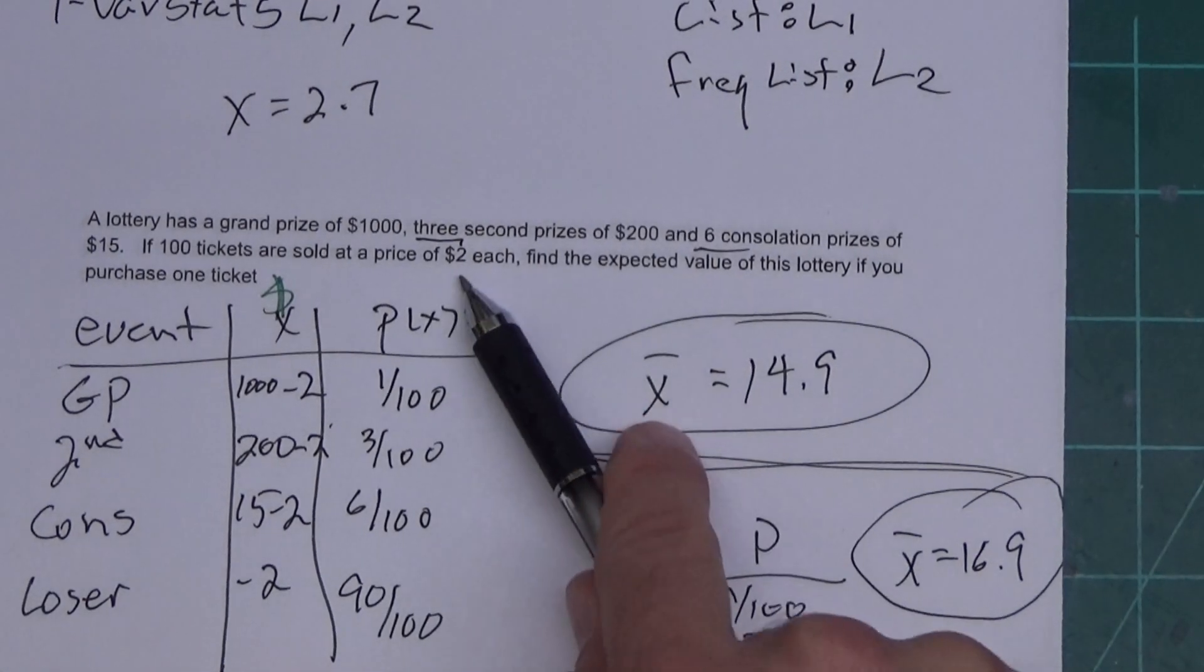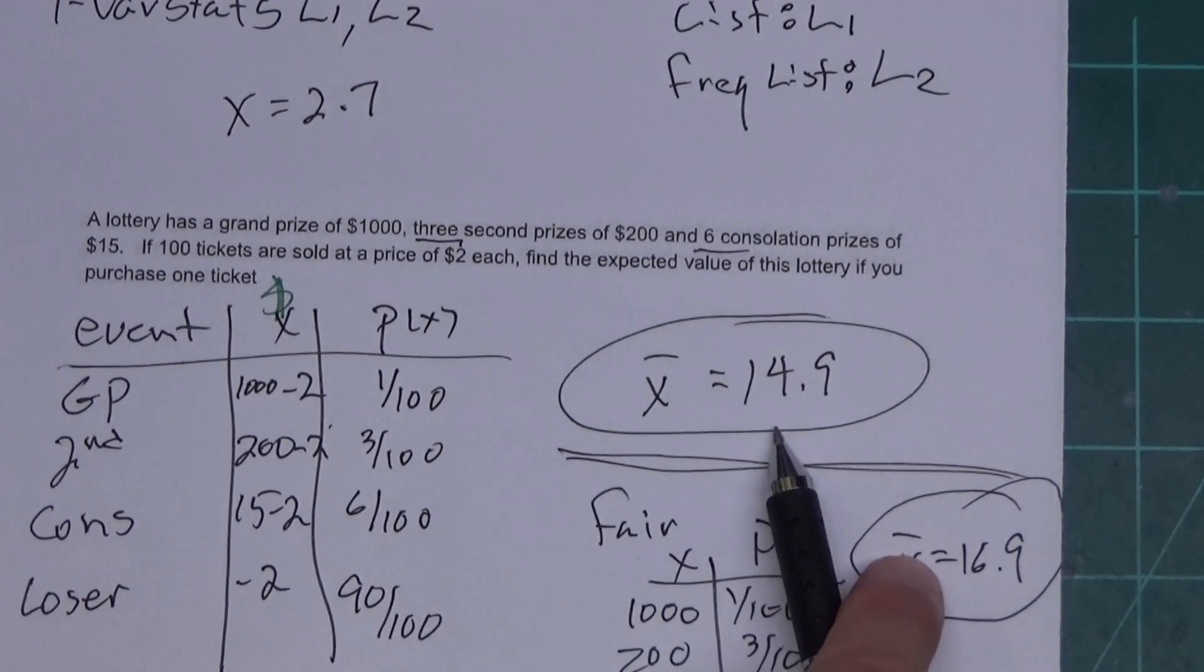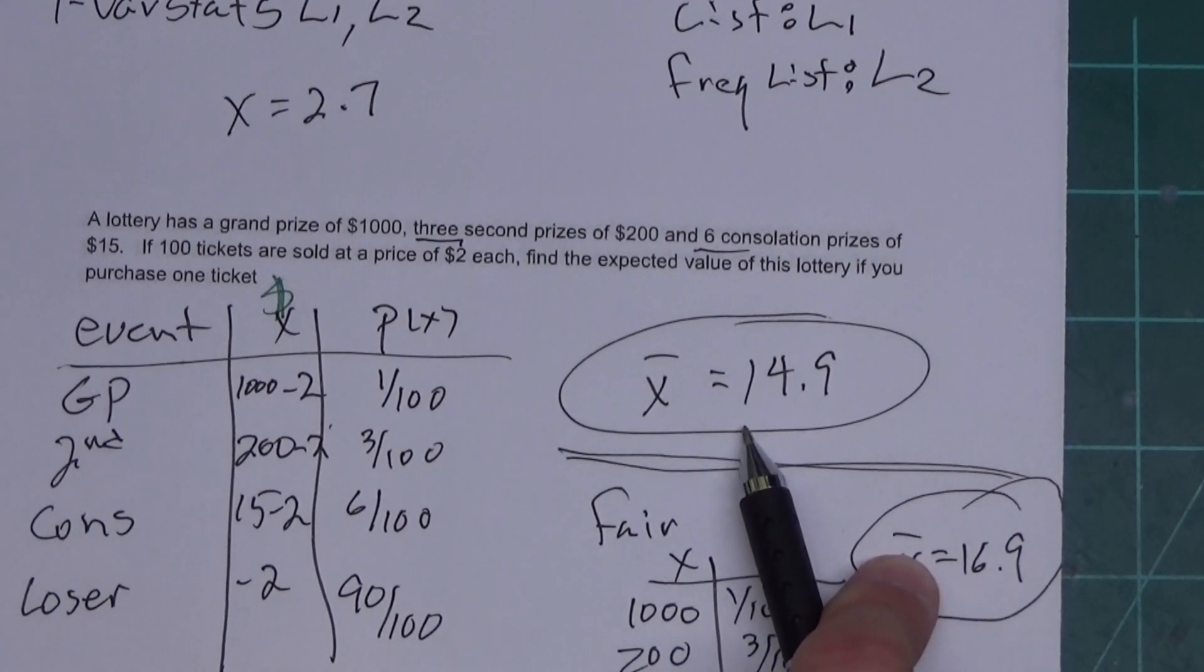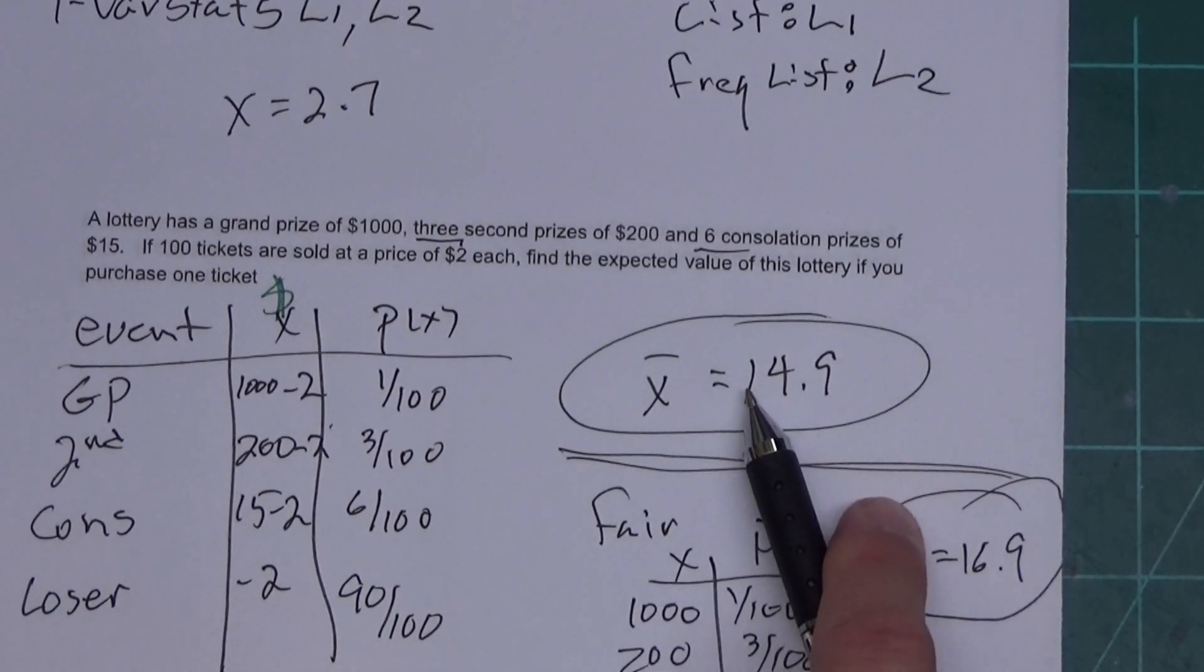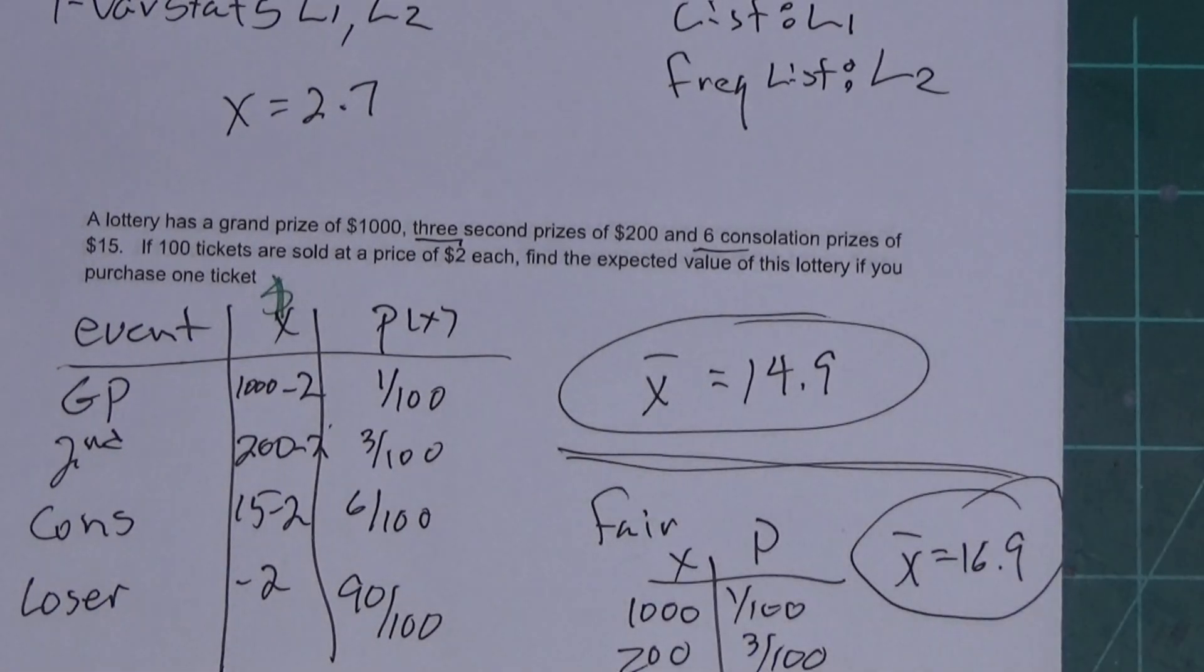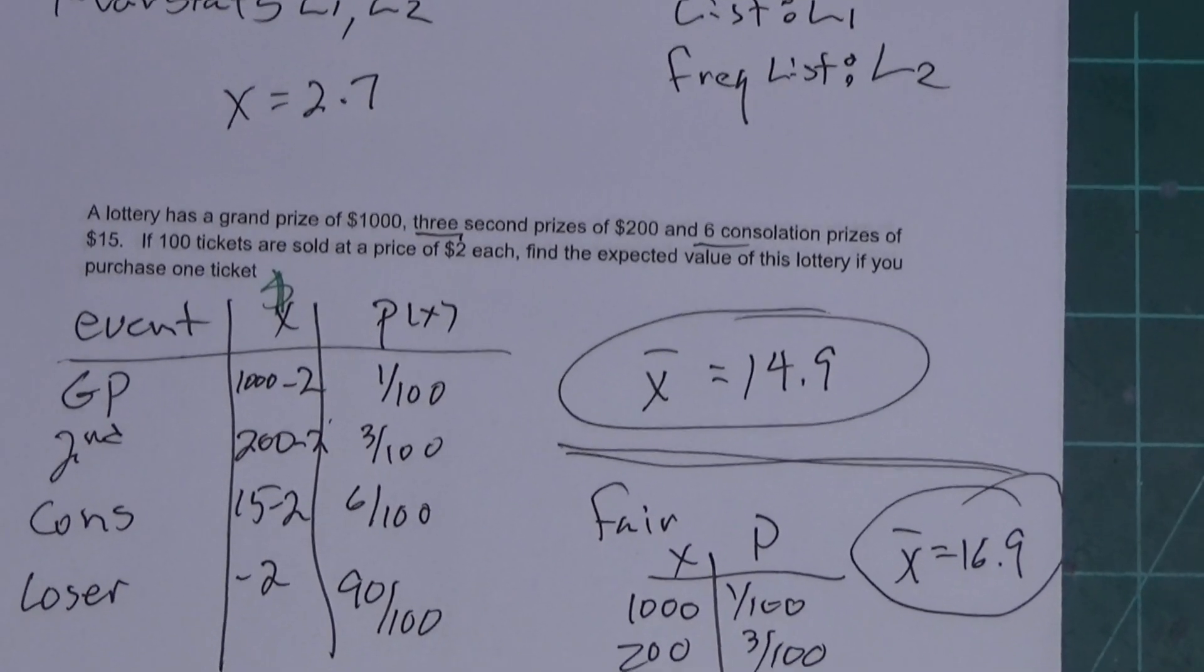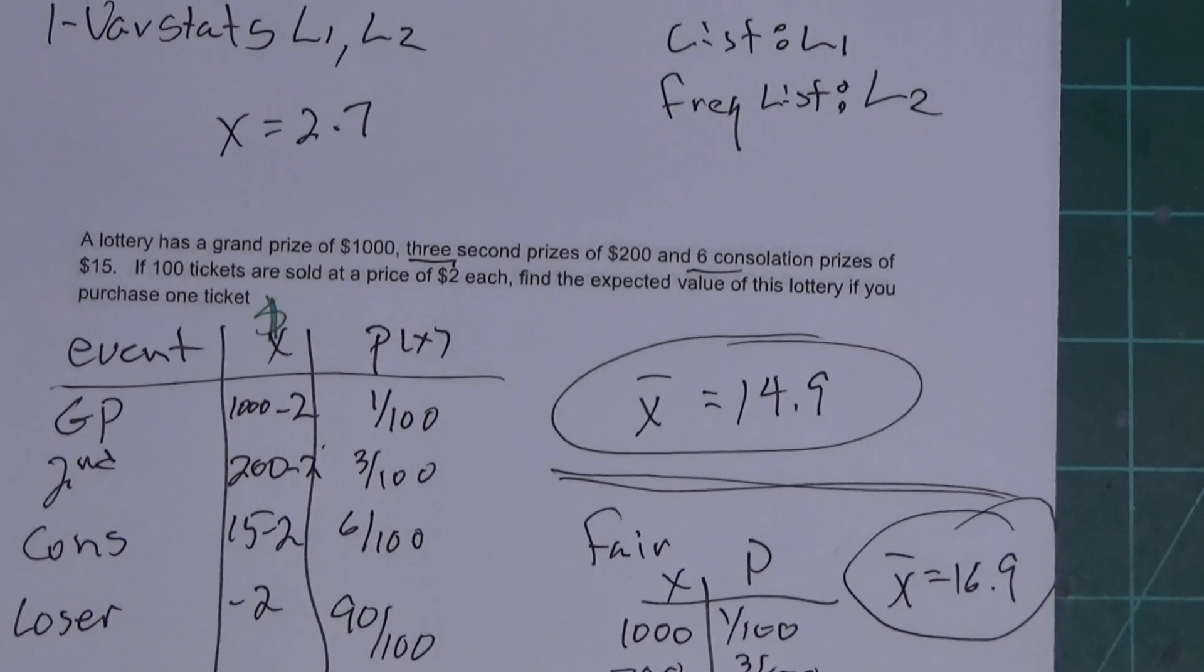The other way to do it is we pay $2 to play this game. You just add 2 to the expected value if it's positive, and that's the price you pay. Well, hopefully you find that helpful and it gets you a better grade. Have a good one.